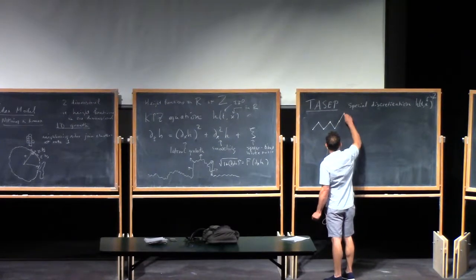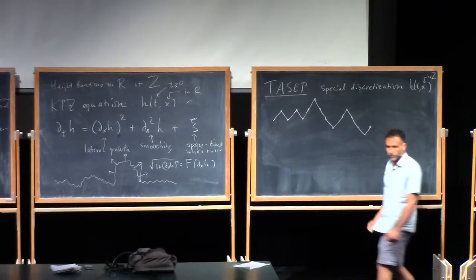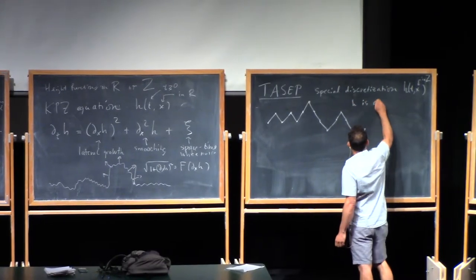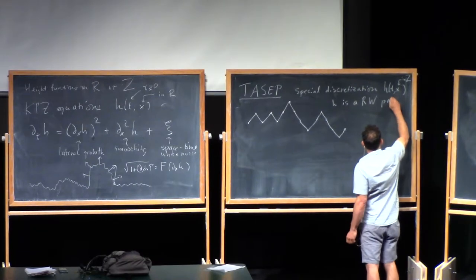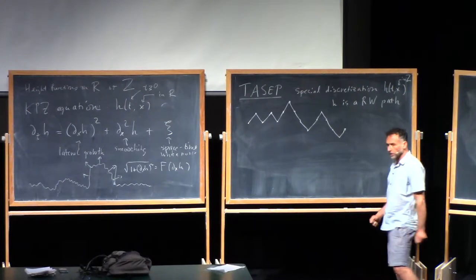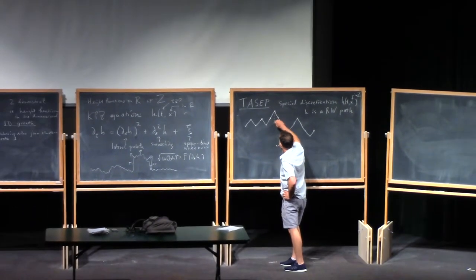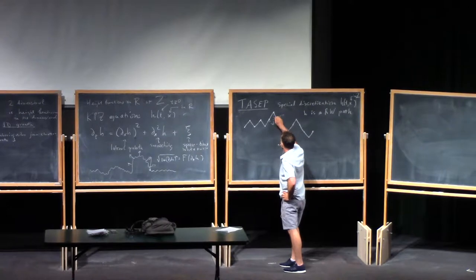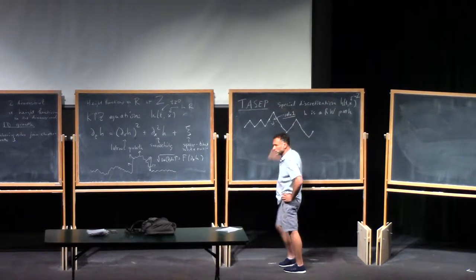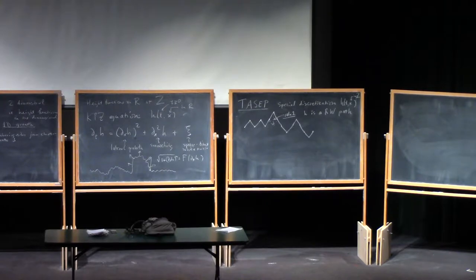The height function is a random walk path — it goes up or down by one. That's the h at some particular time, and the dynamics is very simple: if you've got an up step, it jumps to a down step at rate one. That happens independently for every one of the ups. So for every little peak, it jumps down to a lower thing. That's the full dynamics, and that's TASEP.